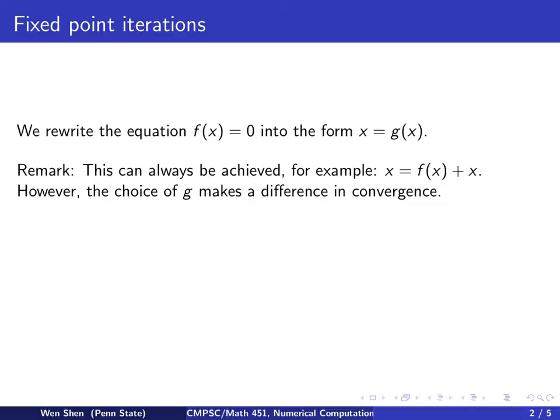Now here is some terminology. If you have a root for f, f of r equals to 0, and then this is equivalent so that you have r equals to g at r, then this value r here is called a fixed point for this function g, because if g takes the value r, it returns the same value r.